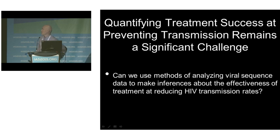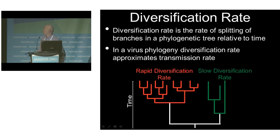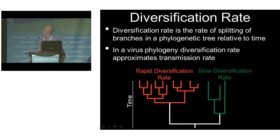One such phylogenetic method that might be applicable here is the use of diversification rates — essentially, the rate at which branches split in a phylogenetic tree relative to time. In a virus phylogeny, diversification rate roughly approximates the transmission rate, because the evolution of the virus takes place on a similar time scale as transmission. We can uniquely assign an integrated diversification rate of a lineage to each tip in a tree, allowing us to test the hypothesis that treated HIV lineages should display lower diversification or transmission rates relative to untreated lineages.